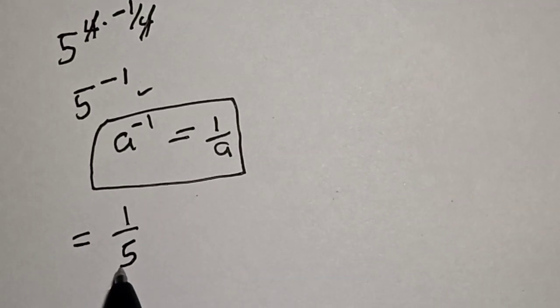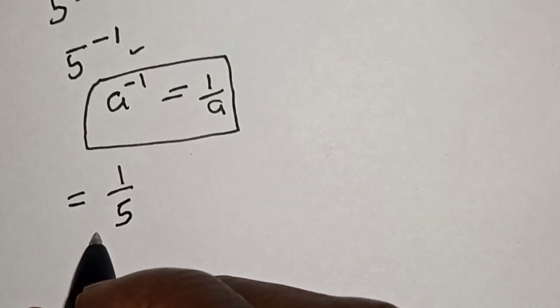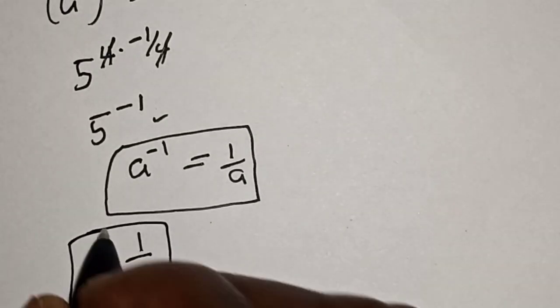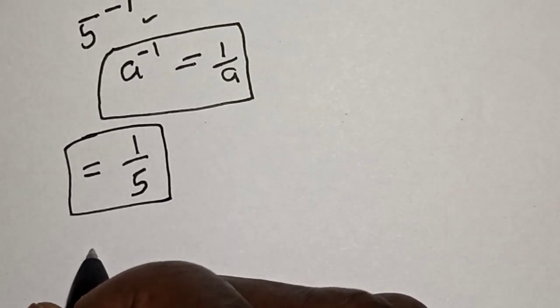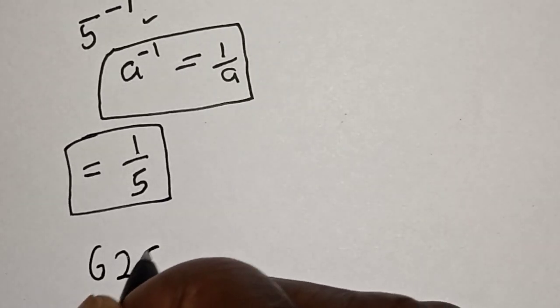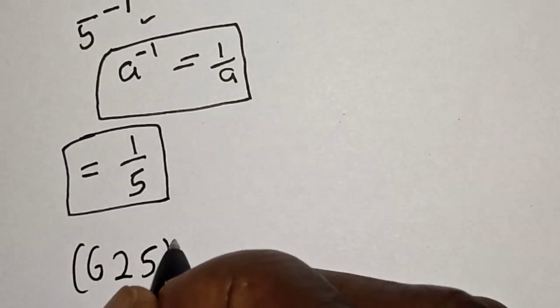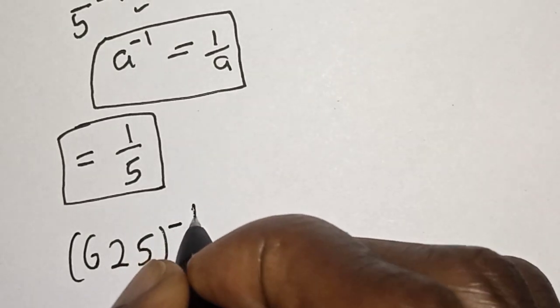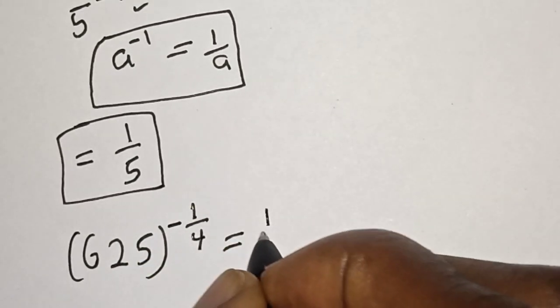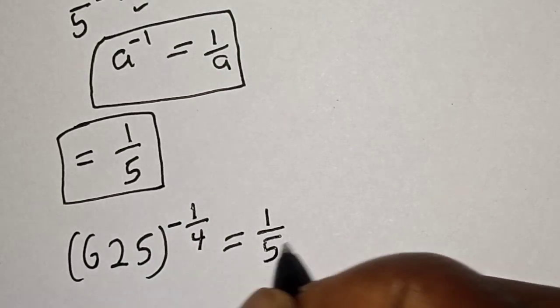Therefore, that is our final answer. 625 to the power of minus 1 over 4 is equal to 1 divided by 5.